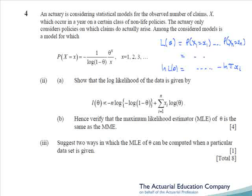In part 2b, we need to verify the maximum likelihood estimator of theta is the same as the method of moments estimate. All we have to do is differentiate our expression, set it equal to zero, and rearrange it, and we'll get the same expression that we were given in part one. The final part asks us to give two ways in which we can compute the maximum likelihood estimate. The expression is rather hard to solve, so we'll have to use numerical methods — say drawing a graph, or trial and error, or Newton-Raphson.